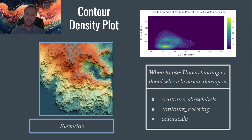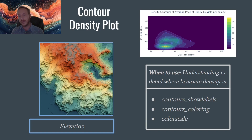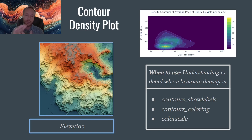The contour density plot is very similar to the heat map that we saw above. This relates a little bit to the kernel density estimation plot from Seaborn. I like this because it shows the same thing — it allows us to really highlight where the density in our bivariate relationship is.